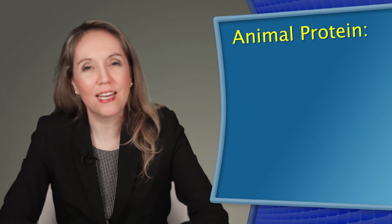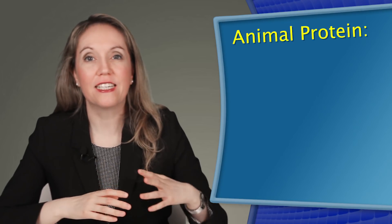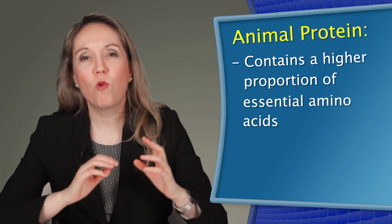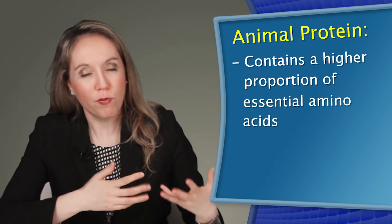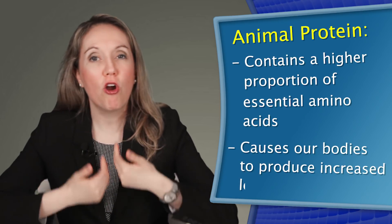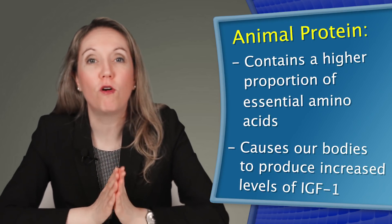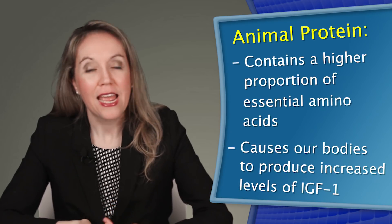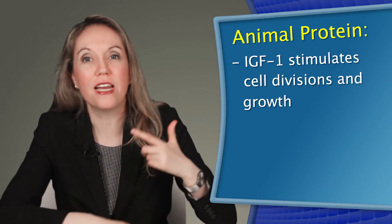But so what if it contains animal protein, right? Well, animal protein contains a higher proportion of essential amino acids. And when we eat animal protein, including that from fish, with that higher proportion of essential amino acids, it causes our bodies to produce increased levels of the hormone IGF-1, or insulin-like growth factor 1.